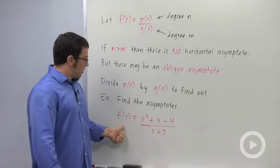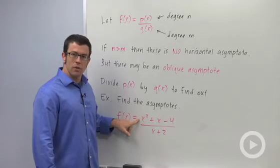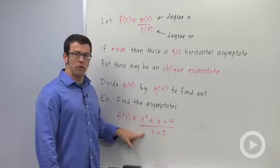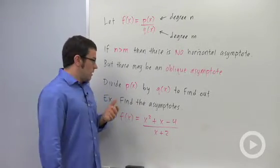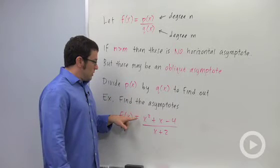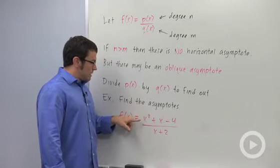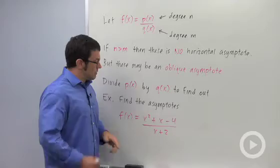Let's take a look at an example. Here I have f(x) equals x squared plus x minus 4 over x plus 2. And I want to find the asymptotes. Now the first thing you want to do is, in order to find the oblique asymptote, if there is one, is divide these two. So let's do that.